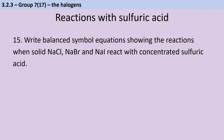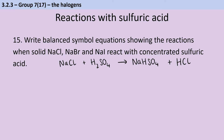For the reactions between solid halide salts and concentrated sulfuric acid, for sodium chloride there is just one equation to remember. When sodium chloride reacts with concentrated sulfuric acid, we make sodium hydrogen sulfate and hydrogen chloride, seen as steamy fumes. This is the one reaction that isn't a redox reaction — there's no change in oxidation states because the chloride ion is too weak a reducing agent. But as we go down group 7, things become better reducing agents and we do start to see redox reactions occurring.